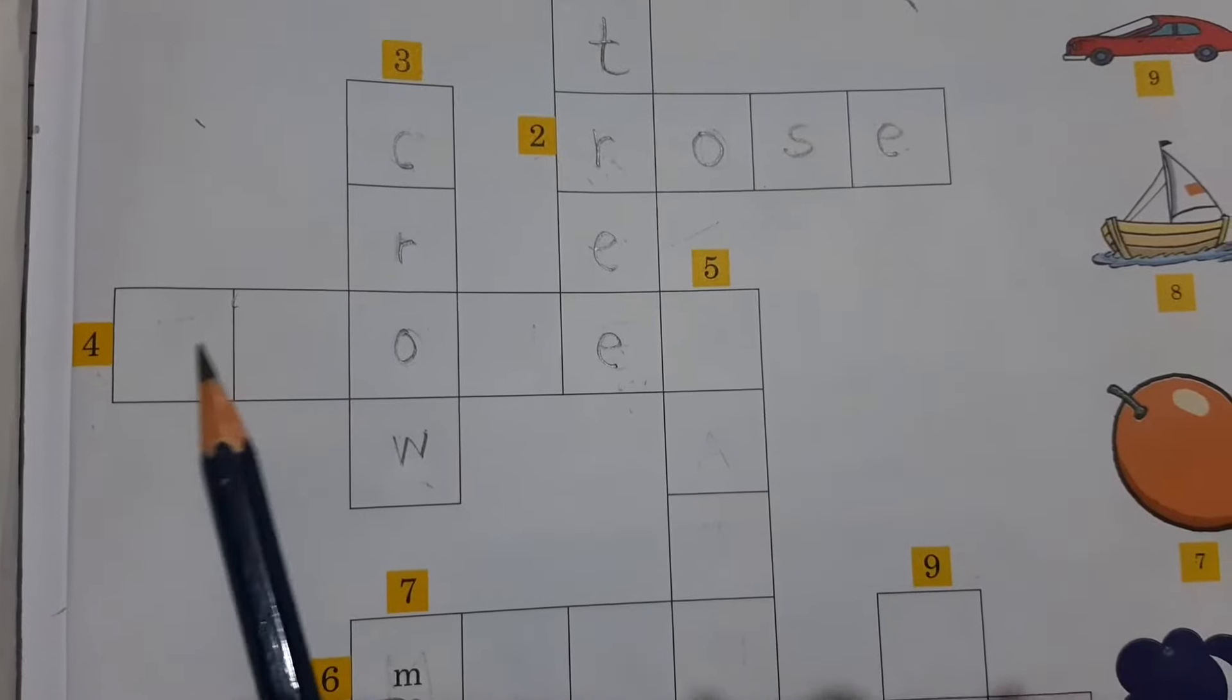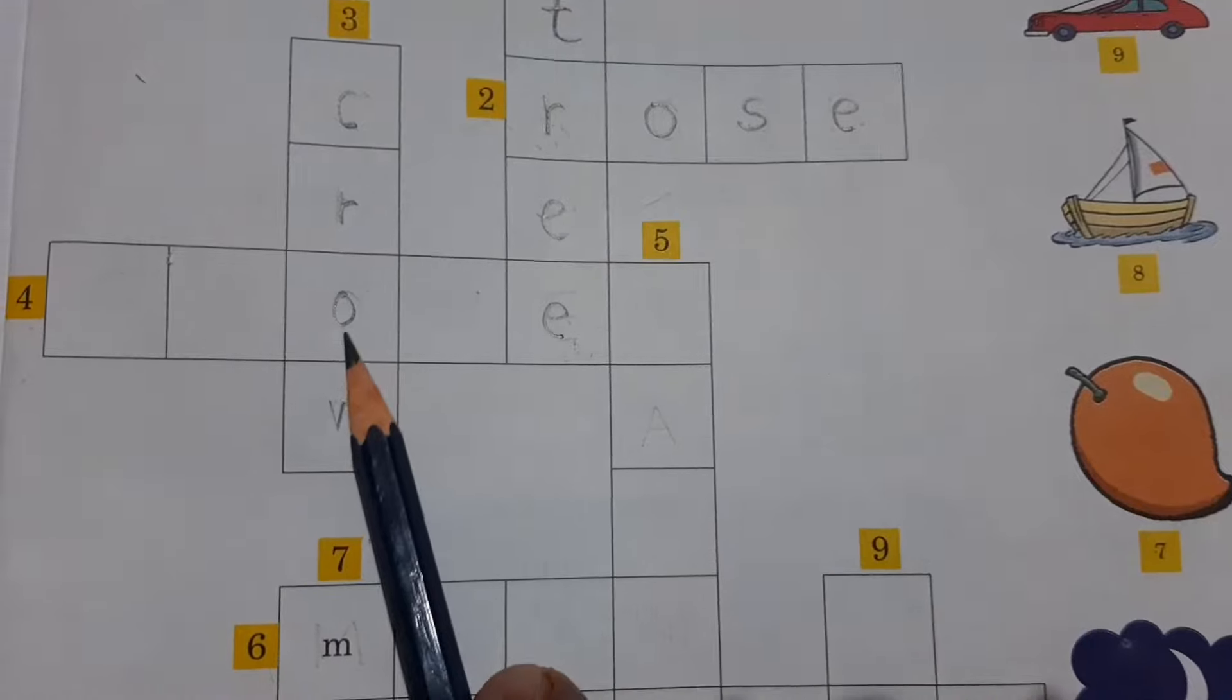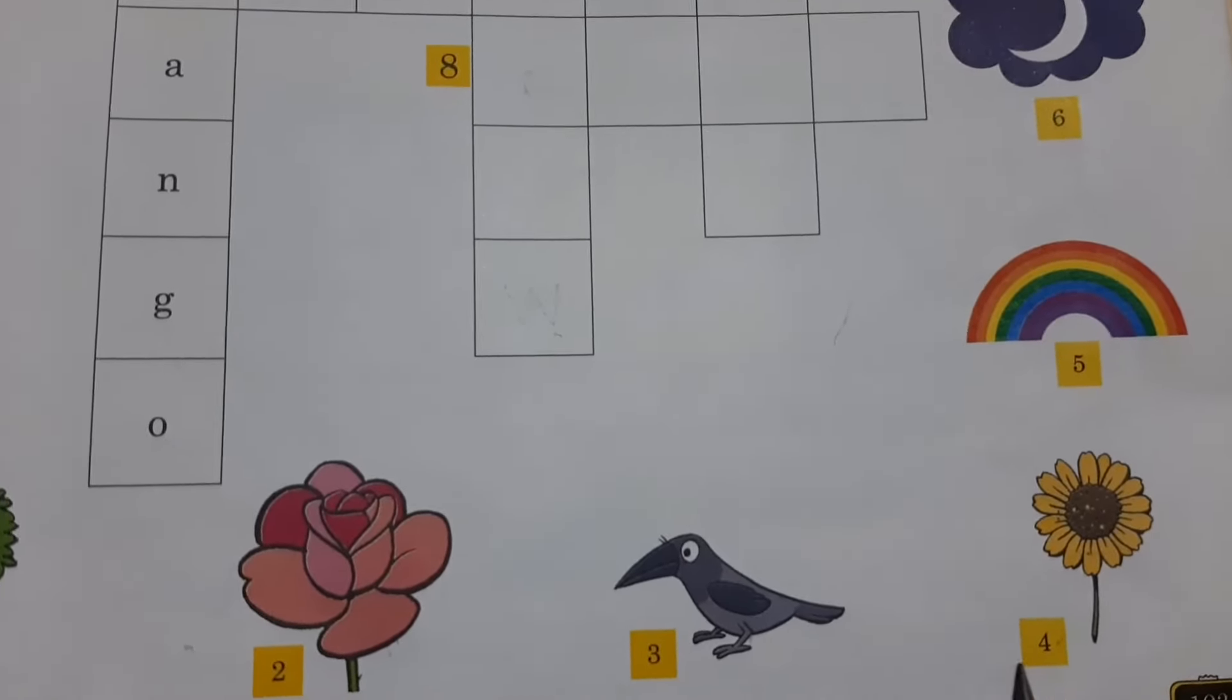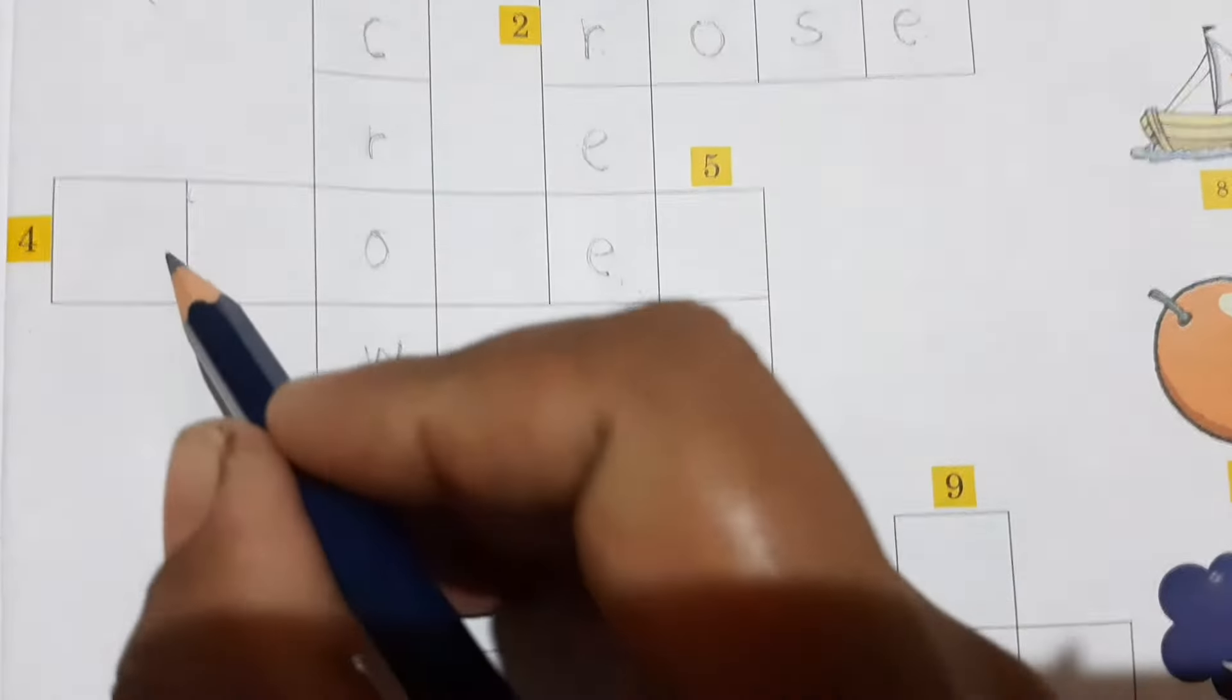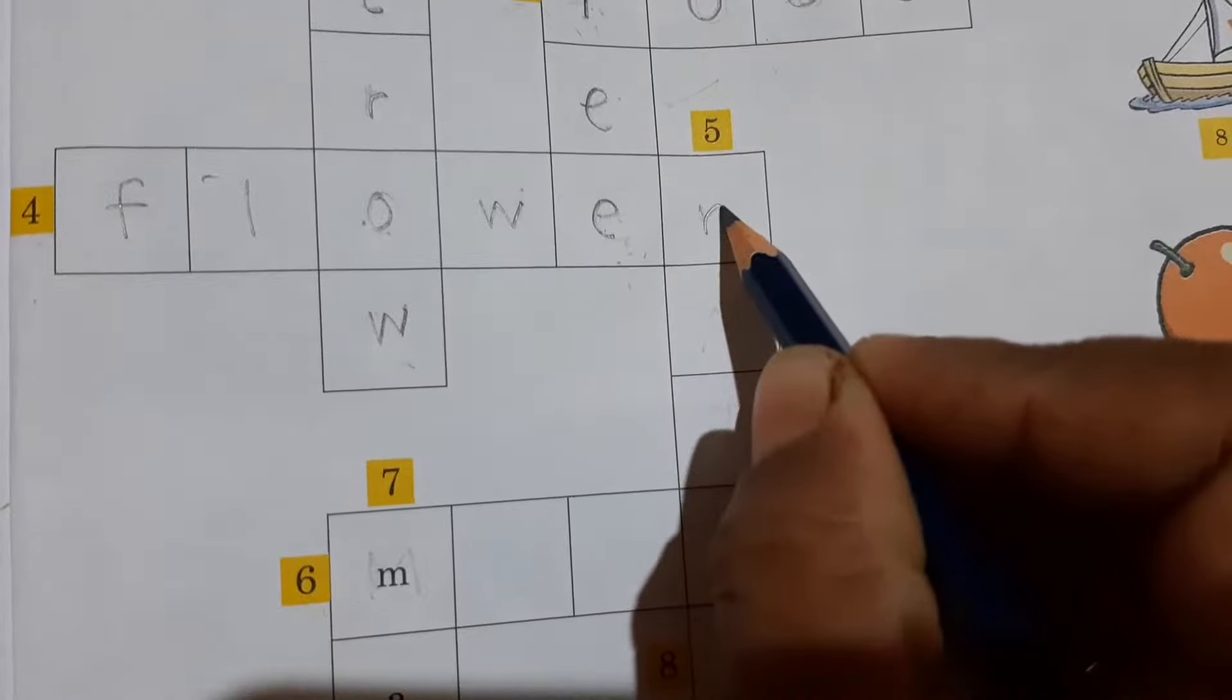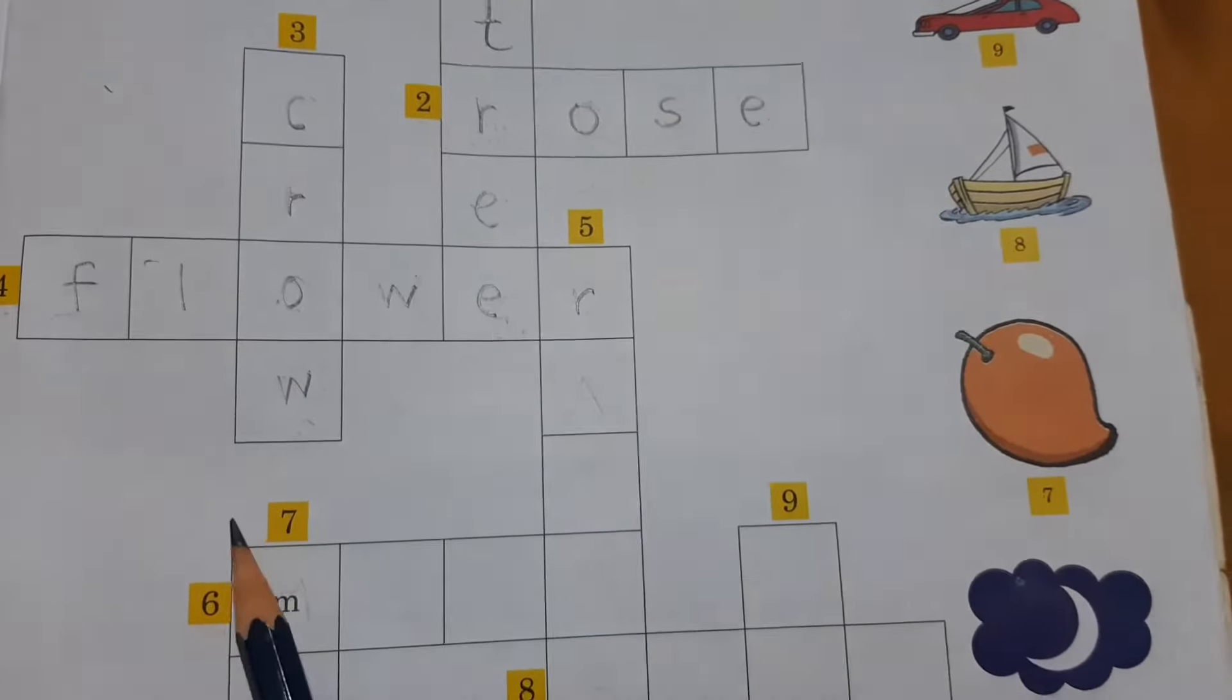When we write the spelling for number 4, already O-N-E is there. The spelling that will come here for number 4 already has O-N-E. Which spelling will we write? See here number 4 and find the number 4 picture. Here, what is the number 4 picture? It's a flower. What is the spelling of flower? F-L-O, it's already there, and W-E-R. As I said, one word is related to another word. Here's C-R-O-W crow, F-L-O-W-E-R flower.